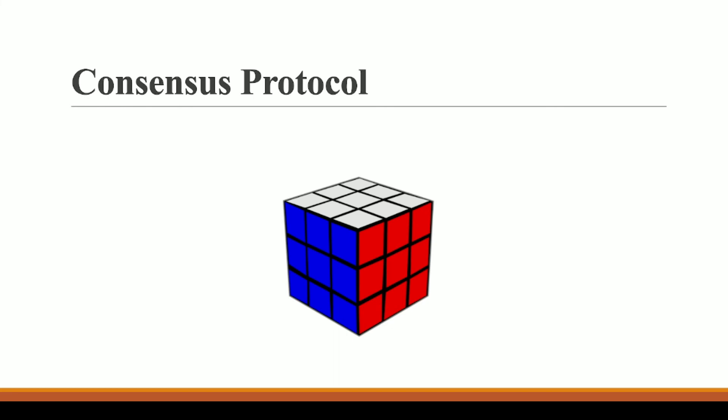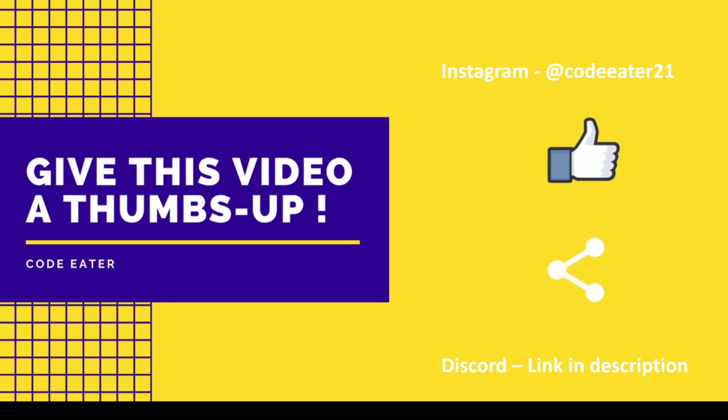It's like solving a Rubik's cube: I give you a problem — you have to solve this Rubik's cube — and anyone from the network can identify whether the Rubik's cube has been solved correctly just by looking at it. But solving the Rubik's cube is actually a time-taking process. Solving the Rubik's cube is like creating a block, and identifying whether it has been solved correctly is like verification and validation — which is a very easy process. So consensus protocol helps us verify and validate blocks before adding them to our blockchain.